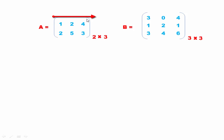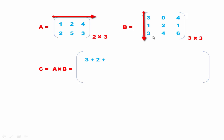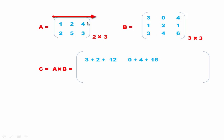We multiply the two matrices by going row-wise then column-wise. First multiply one with three to get three, plus two with one to get two, plus four with three to get twelve. Next we multiply this row with this column: one multiplied with zero is zero, two multiplied with two is four, then four multiplied with four is sixteen.